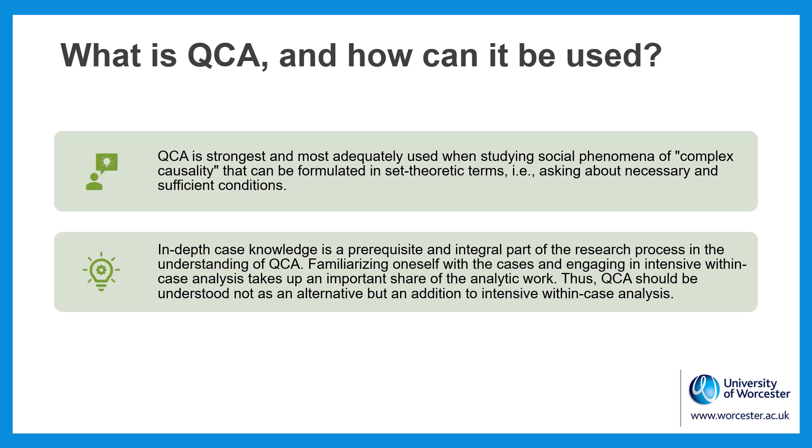This focus on the explanation of a given phenomenon or event, as well as the assumption of complex causality underlying social phenomena, bears on the kind of research questions and data QCA is best applied to. First, QCA is strongest and most adequately used when studying social phenomena of complex causality that can be formulated in set-theoretic terms, which means asking about necessary and sufficient conditions. For such research questions, QCA's sensitivity to causal complexity gives it an analytic edge over many statistical techniques of data analysis.